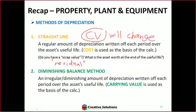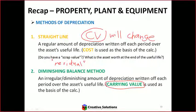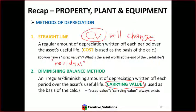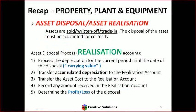The second method is the diminishing balance. What do I use as the basis of the calculation? The carrying value. Will the carrying value change? Yes, of course — it's what the asset is actually worth at that point in time. So will the depreciation change? Yes, it will — the amounts will always change over time because the carrying value is changing. With diminishing balance, there's always a scrap value because you'll never get to zero. It's a repetitive process — the depreciation gets smaller and smaller, and so does the carrying value, tending towards zero.